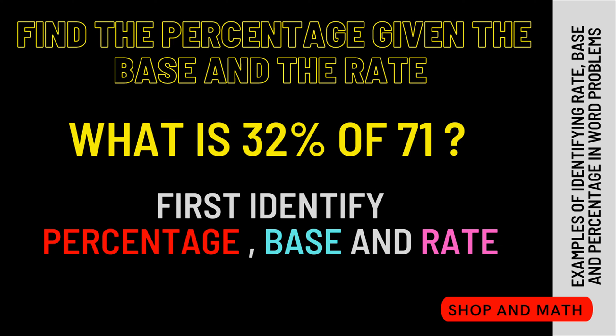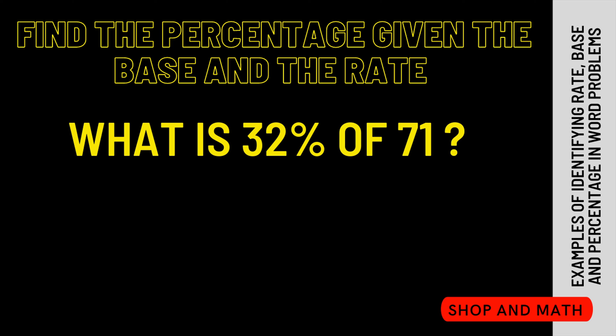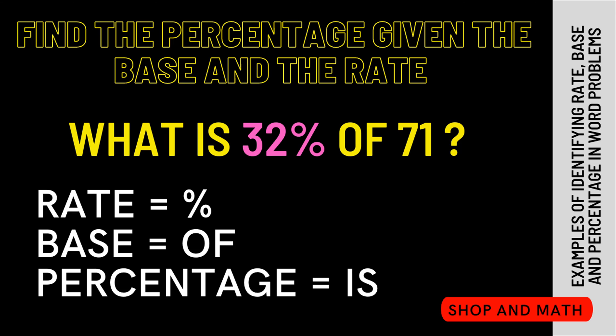First we need to identify percentage, base, and rate. Have you identified the base and the rate yet? Percent. Percent sign has an association with what? The association of percent is with rate, so therefore 32% is the rate.